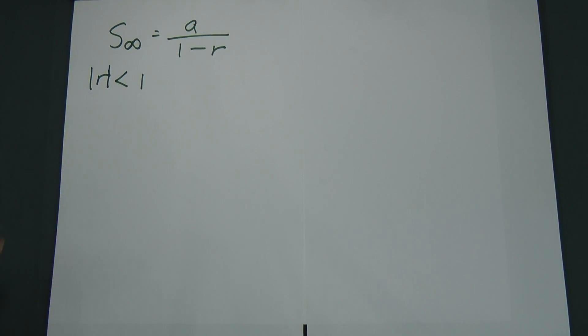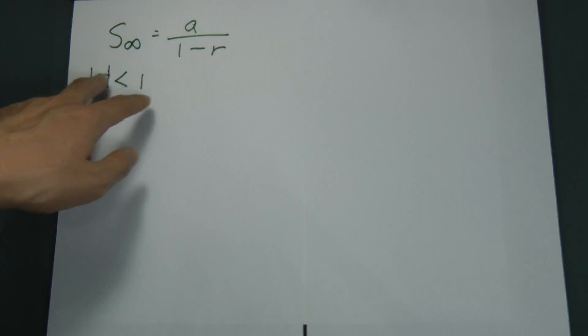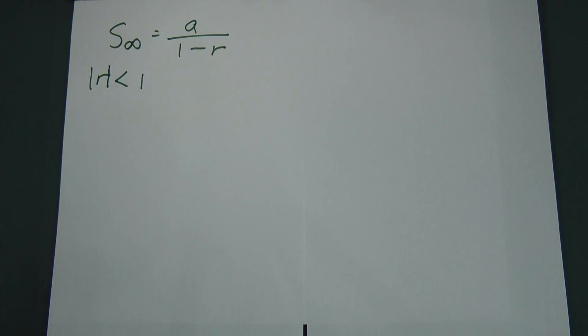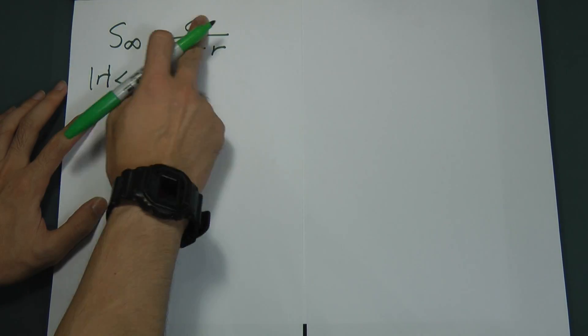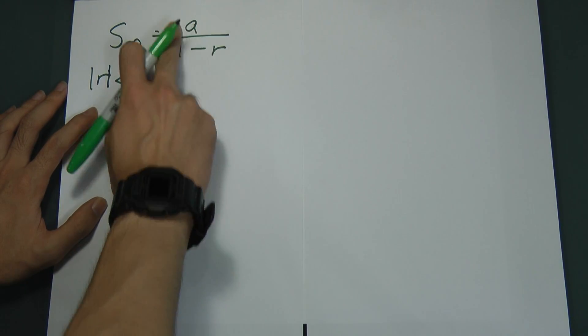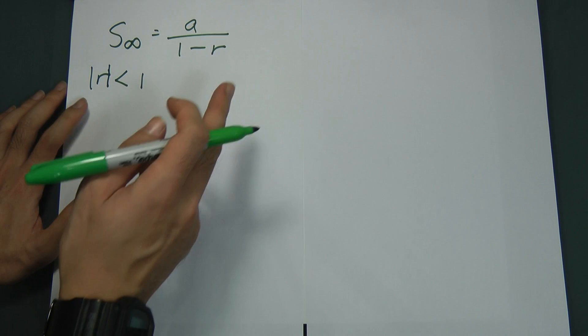This is going to be a very concise video. First, the sum of infinity formula is a over 1 minus r, where a is the first term and r is the common ratio.